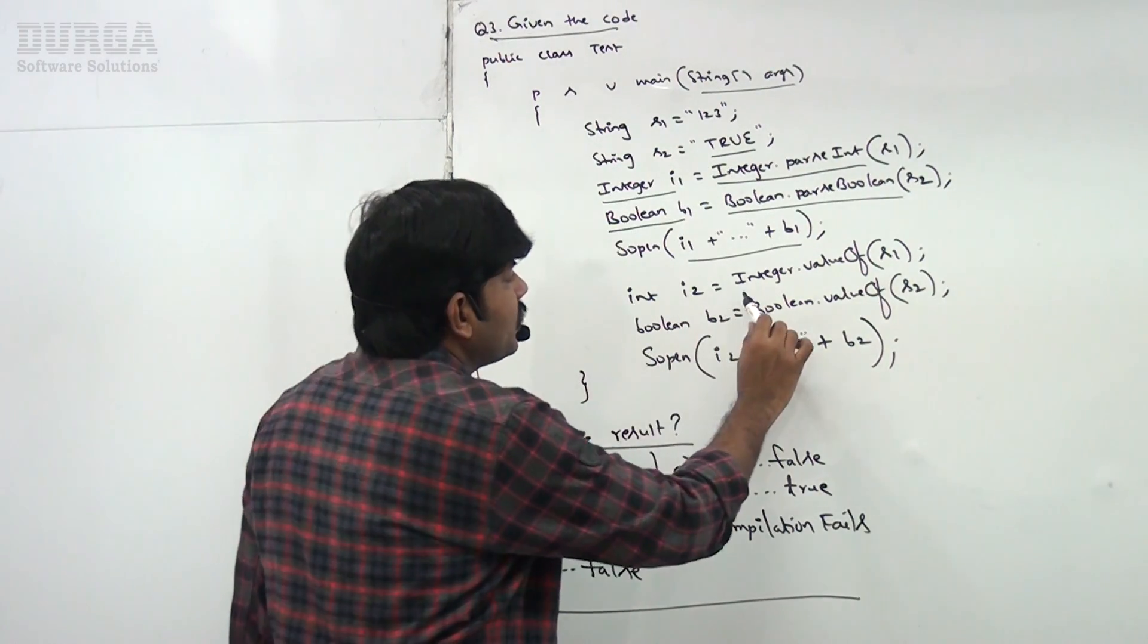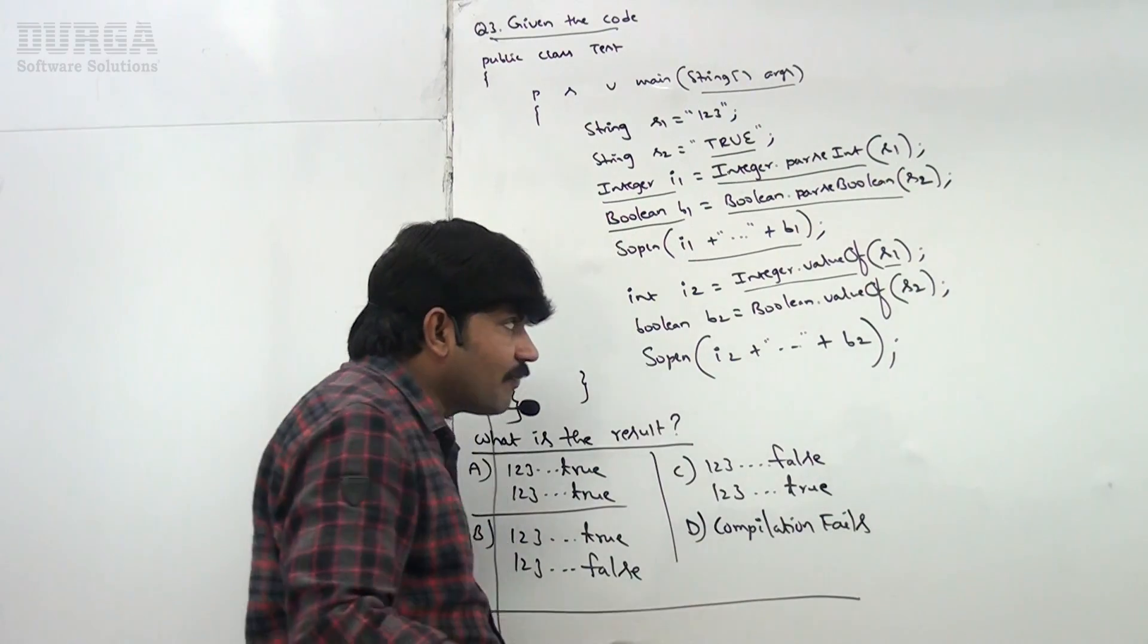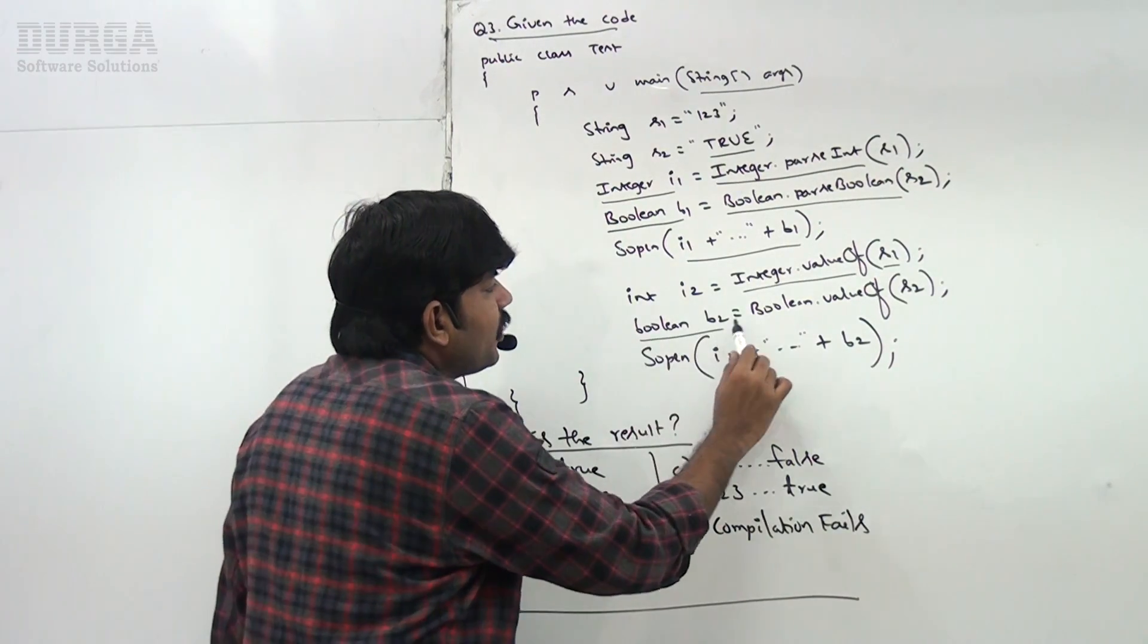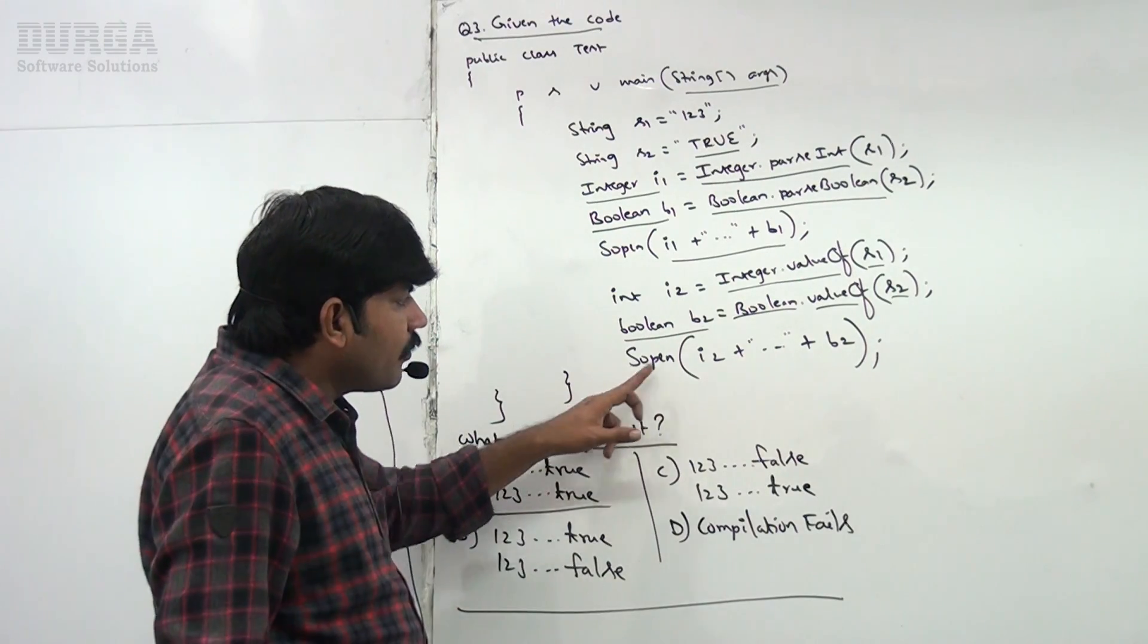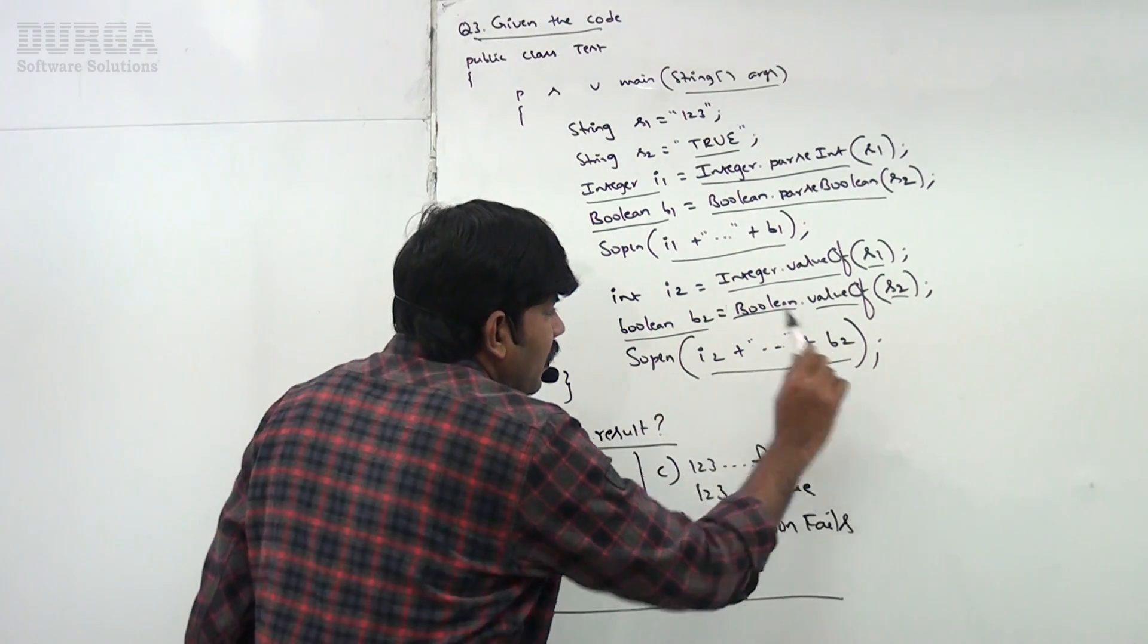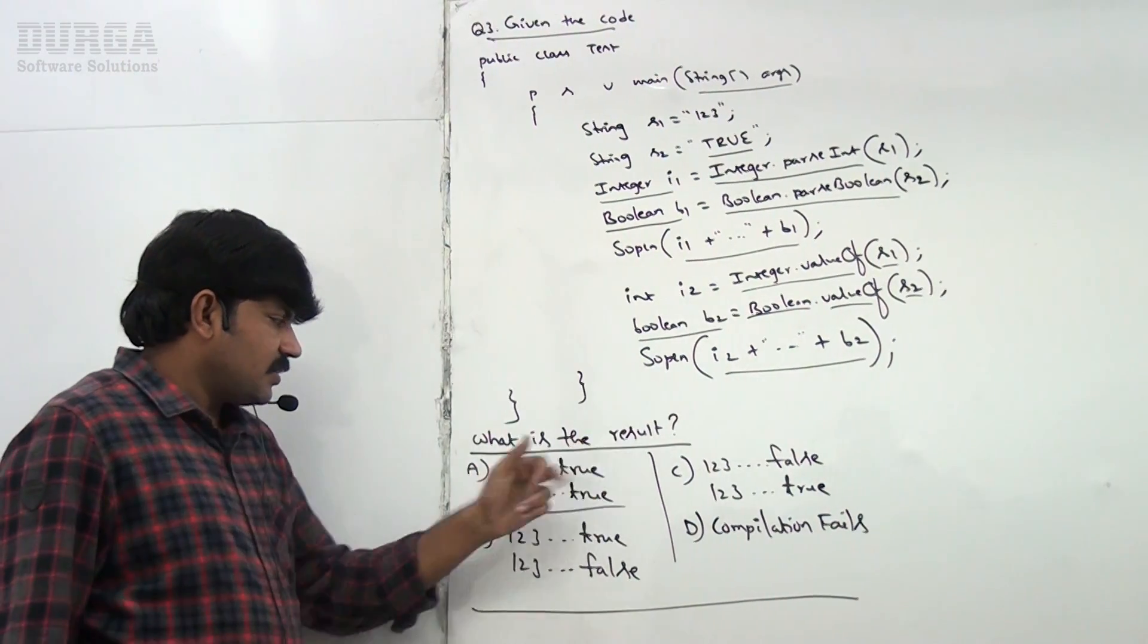Int i2 equals Integer.valueOf(s1). Boolean b2 equals Boolean.valueOf(s2). Okay, now System.out.println of i2 dot dot dot b2. What is the answer sir? So, what is the result?